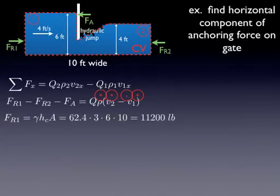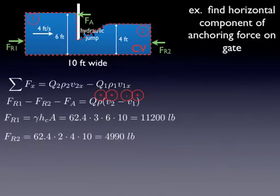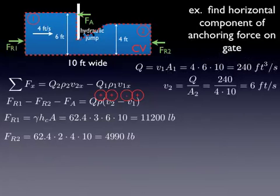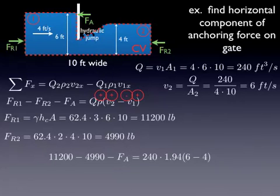We have to go back to remember how to calculate the resultant force on a planar surface. It's gamma·hc·A, where hc is the distance from the water surface to the centroid of the planar surface. For the first surface, that's 3 feet from the top to the middle, and the area is 60 square feet — that gives us a force. On the other side it's a little bit different: it's 2 feet to get from the water surface to the center and it's 40 square feet, which gives us a much lower total force. The flow rate we're not given, but we can calculate it using velocity times area. The second velocity we can calculate from flow rate divided by area. Plugging all those in, the anchoring force works out to 5,280 pounds, and it's positive, so the gate is pushing on the water — or in other words, the water is pushing on the gate.